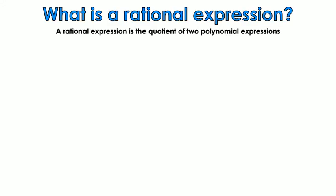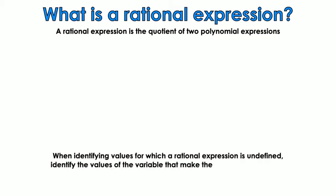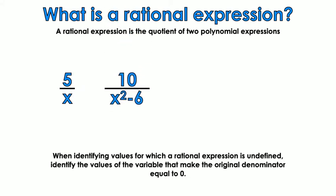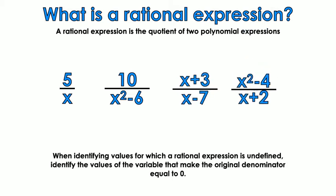So what is a rational expression? A rational expression is the quotient of two polynomial expressions. When identifying values for which a rational expression is undefined, identify the values of the variable that make the original denominator equal to zero. These are what rational expressions look like: 5 over x, x over x squared minus 6, x plus 3 over x minus 7, x squared minus 4 over x plus 2. They're basically a polynomial for the denominator and a polynomial for the numerator.